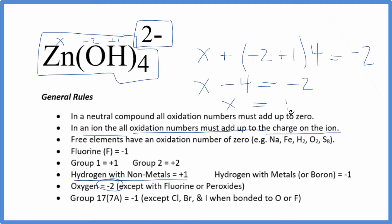x equals a positive 2. So the oxidation number on the Zn in this Zn(OH)₄²⁻ ion, that's going to be plus 2. And most often we will see zinc with a plus 2 oxidation number.